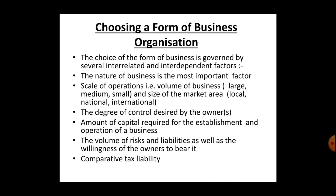If the capital is supplied by two or more persons, it refers to a partnership organization. Or if the capital is provided by many persons in the form of shares to an institution with a legal entity, it is called a joint stock company. There are other forms of ownership also, but they are merely outgrowths of these three types.